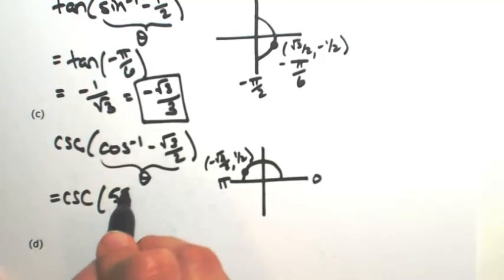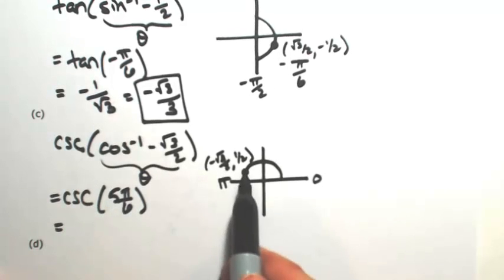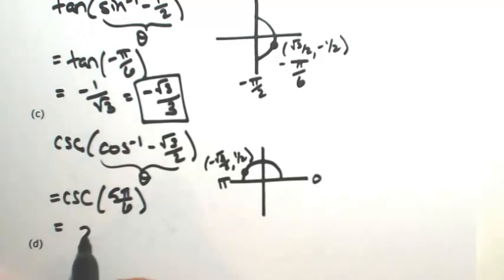That's just the first part. Now we need to find the cosecant of that same angle — cosecant is the reciprocal of sine. The sine is one-half, so the reciprocal is two.